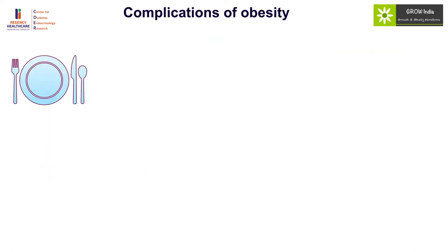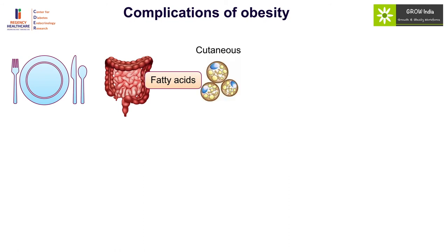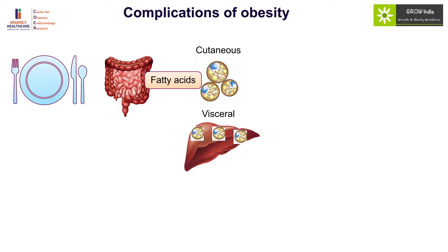The complications of obesity are largely due to insulin resistance, which is induced by fatty acids. Fat absorbed by the gut has the option to go into the subcutaneous pool — where it can be stored — or into the visceral pool, predominantly in the liver and pancreas. Therefore, the amount of fat consumed and an individual's capacity to store subcutaneous fat will determine subsequent complications.